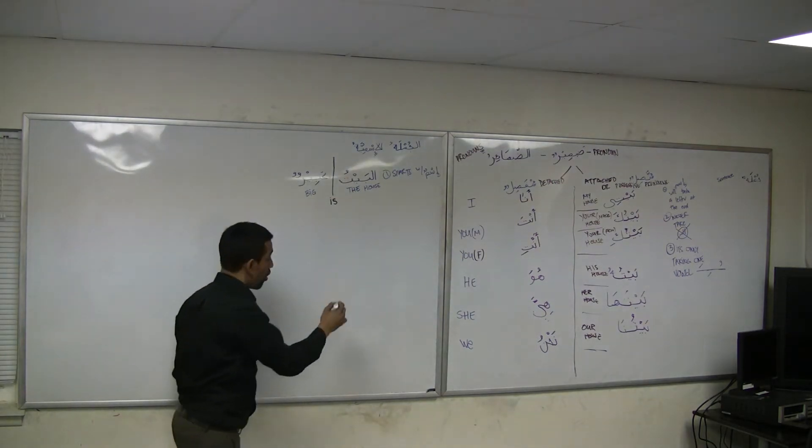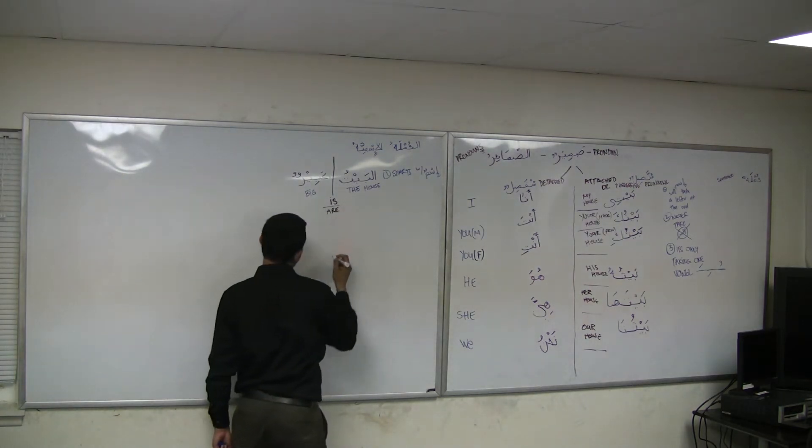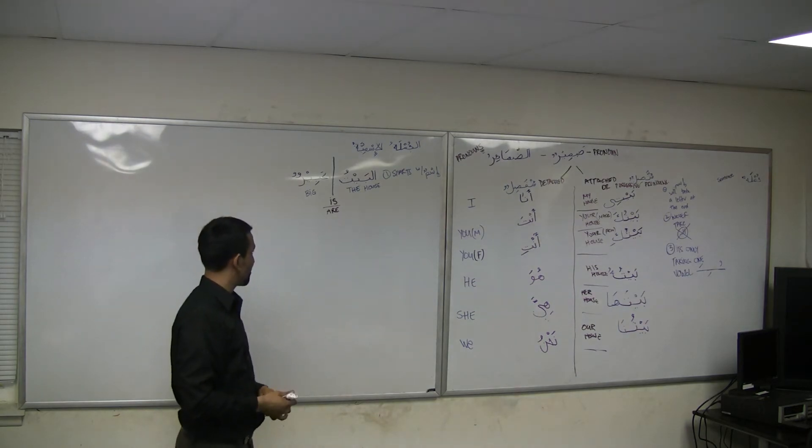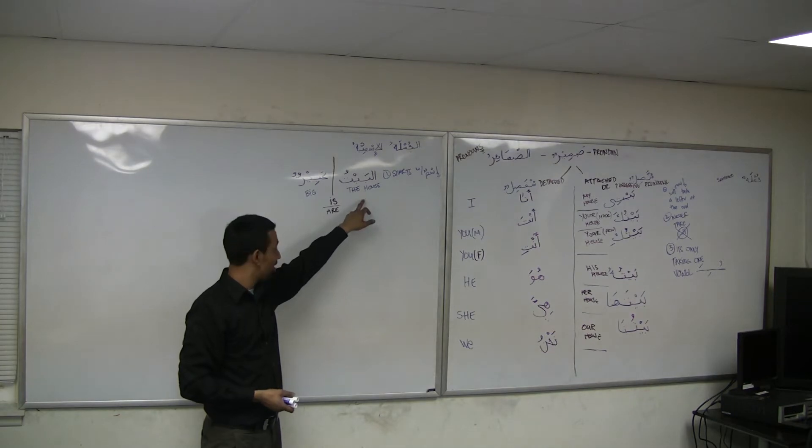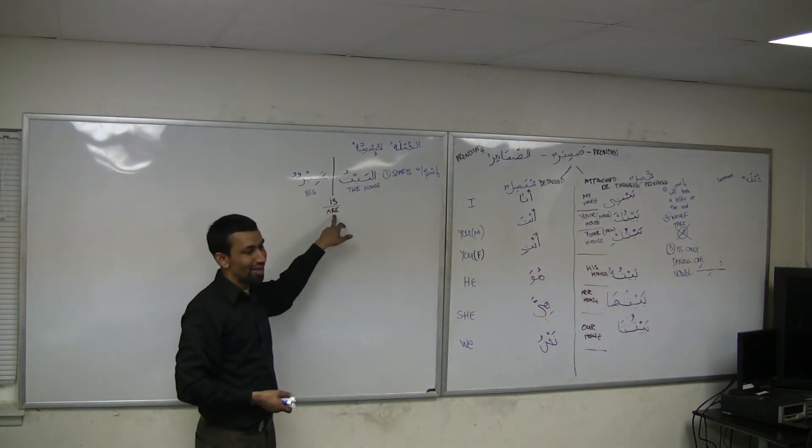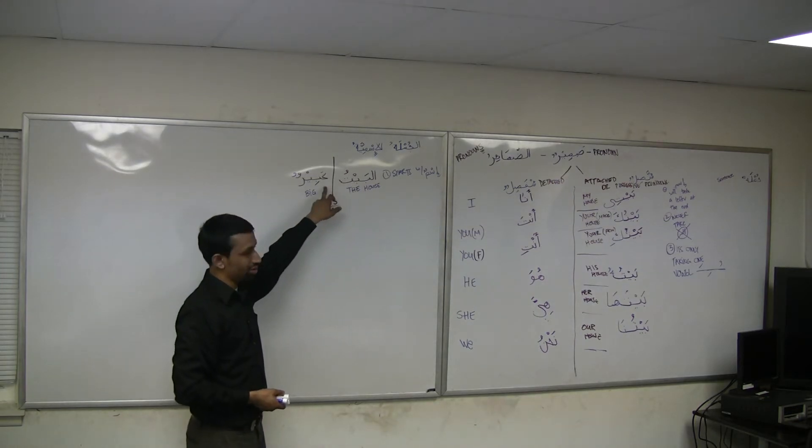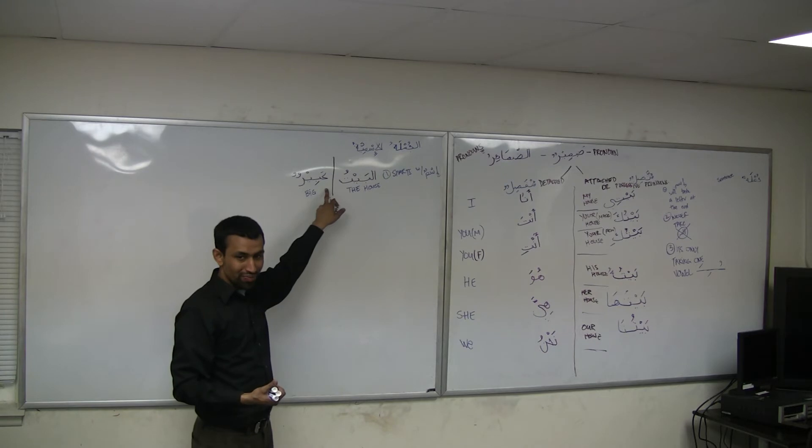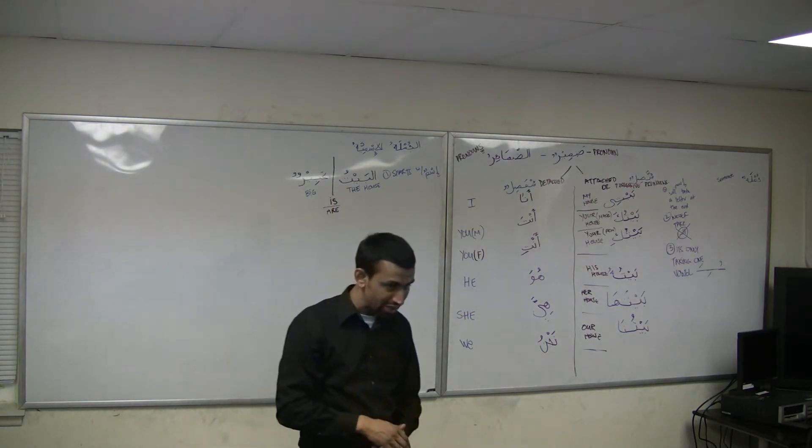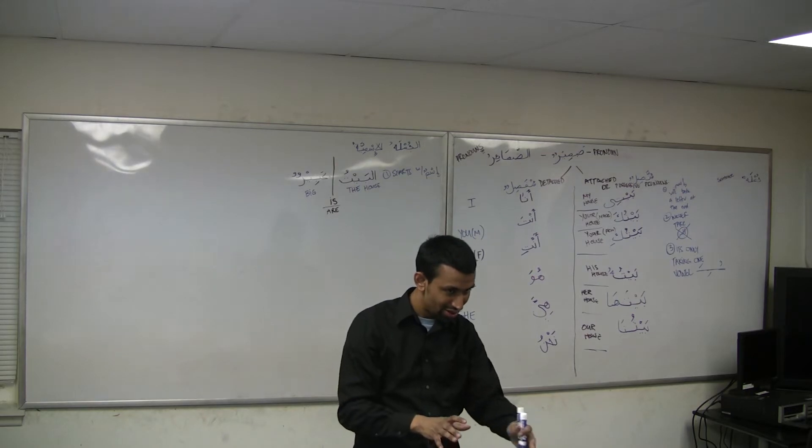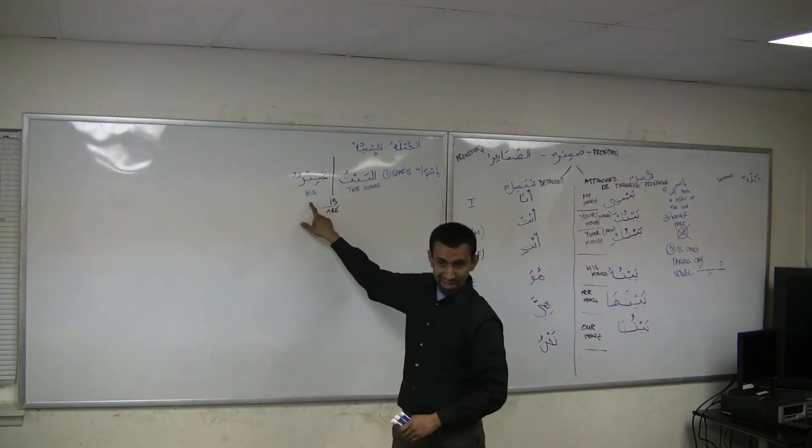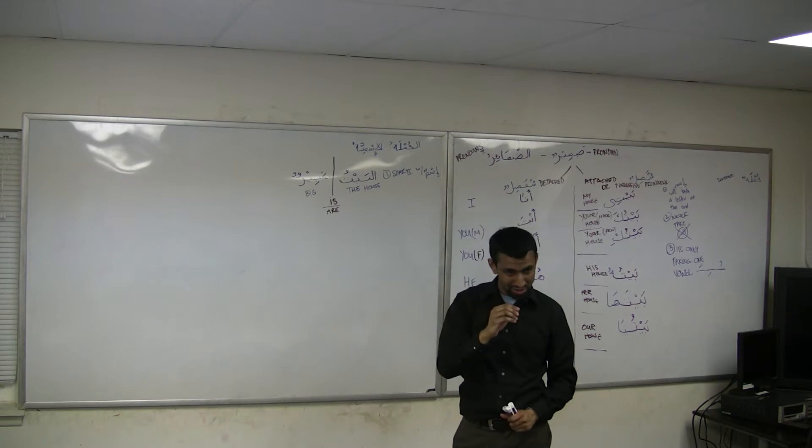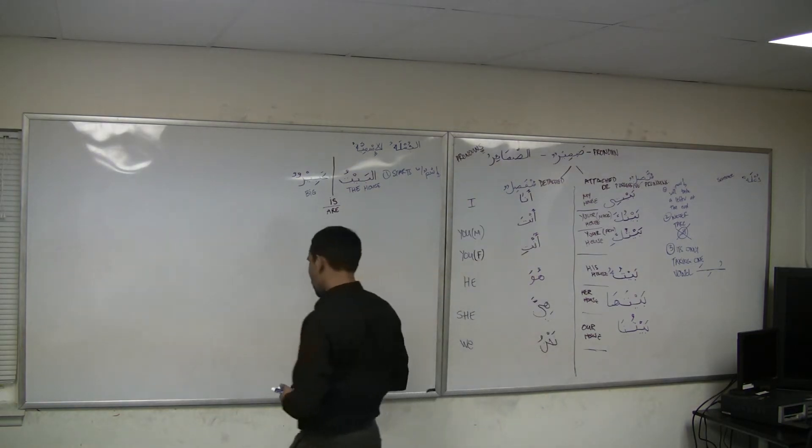Or you can also have 'are'. For example, if I said al-muslimoona kibaarun - the Muslims are big. Now to make a jumla ismiya, let's make some more sentences. What is another sentence we can make?